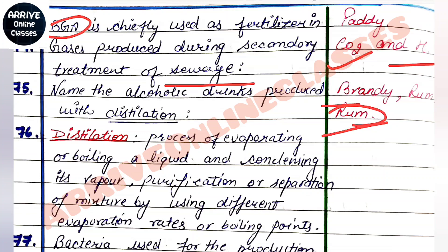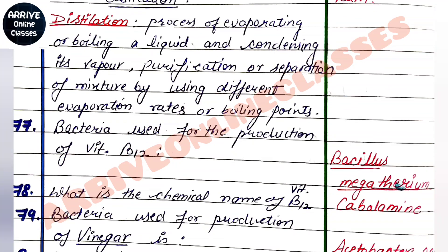What is distillation? Distillation is a process of evaporating or boiling a liquid and condensing its vapors — a purification or separation of a mixture by using different evaporation rates or boiling points.